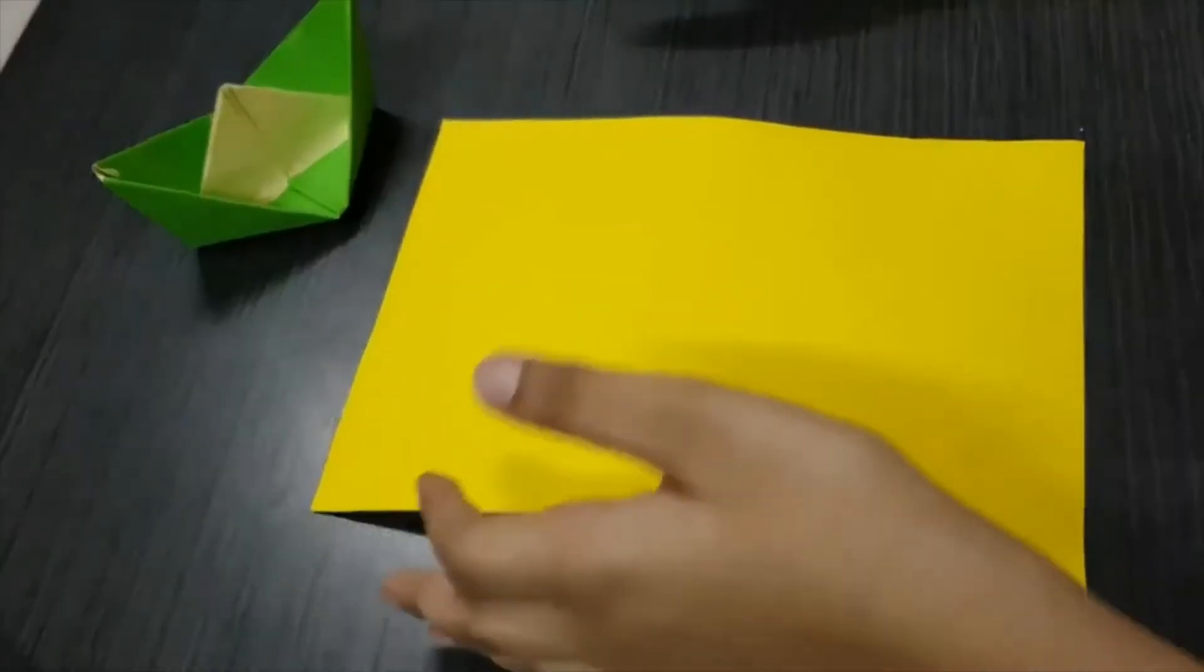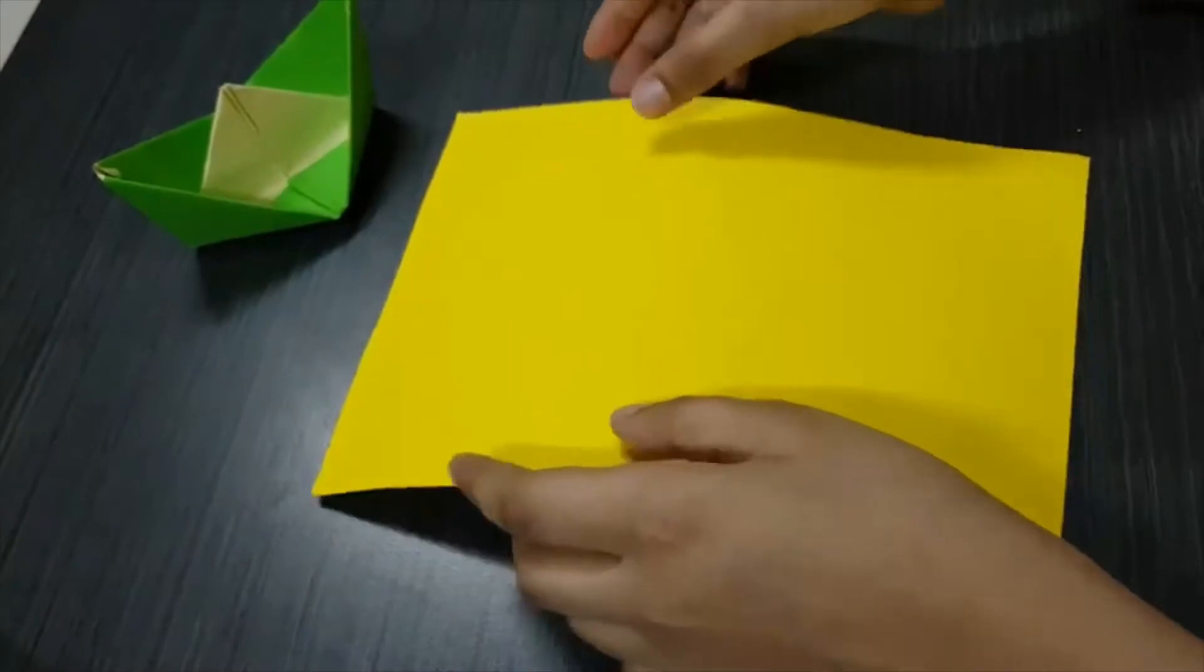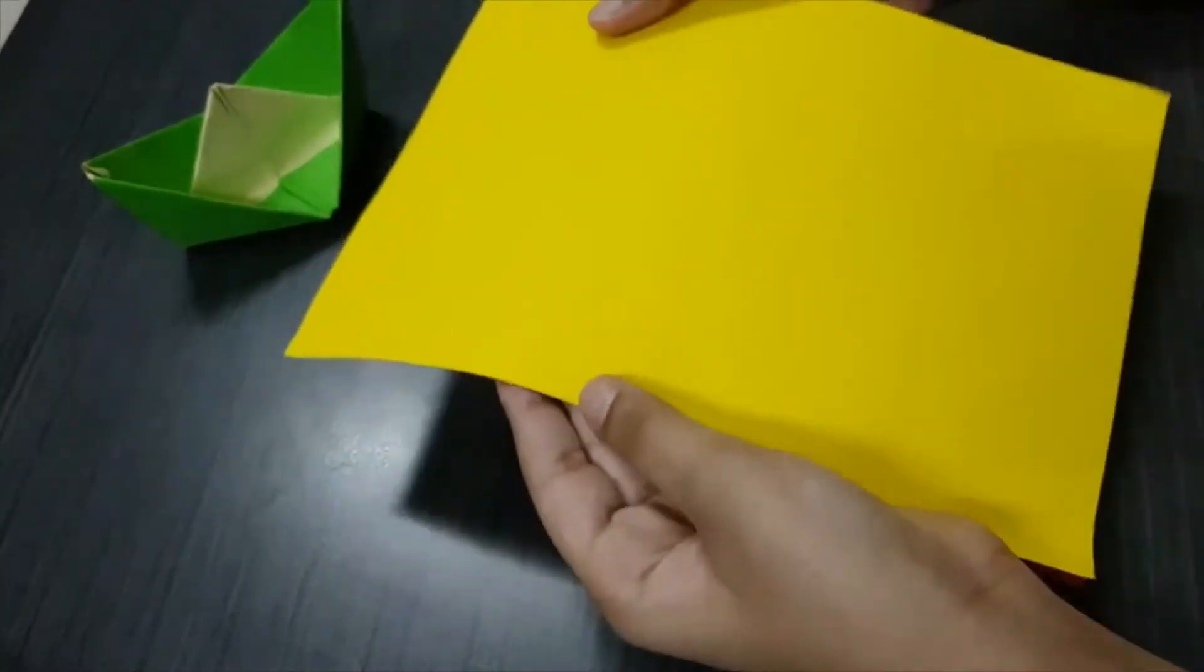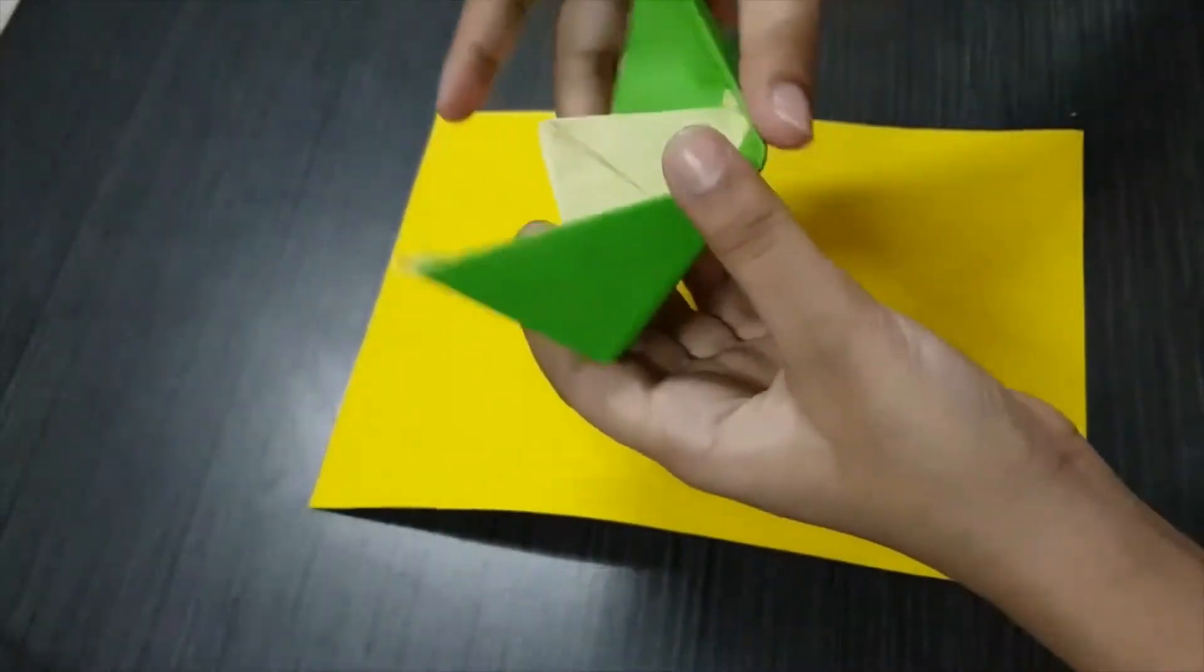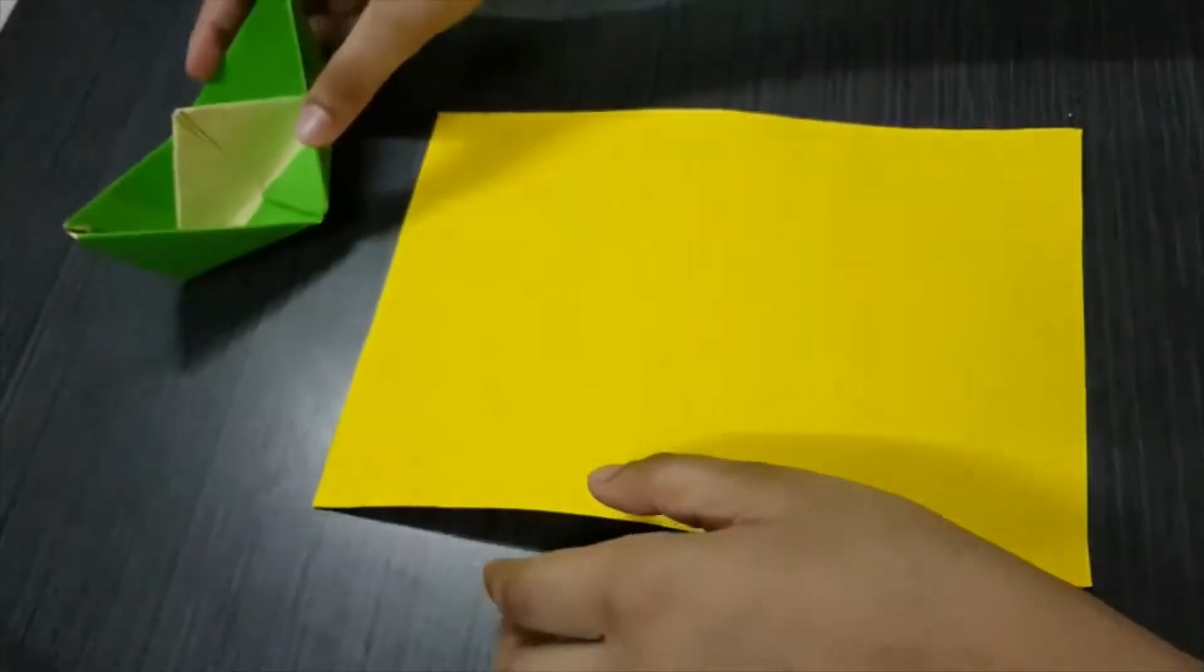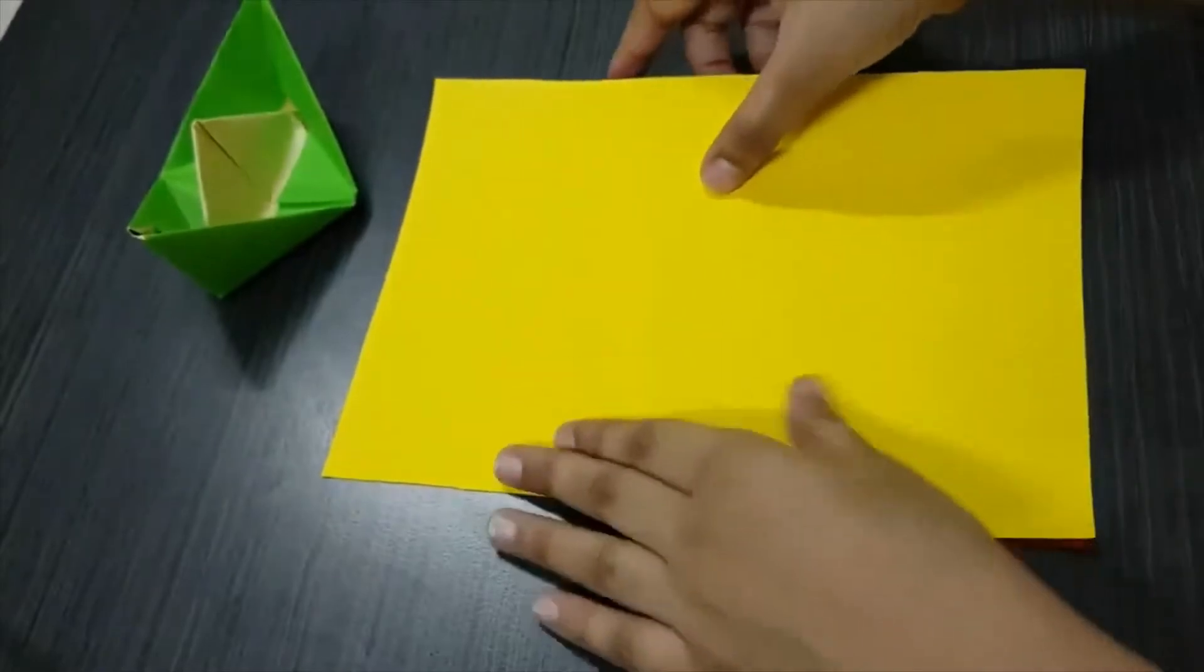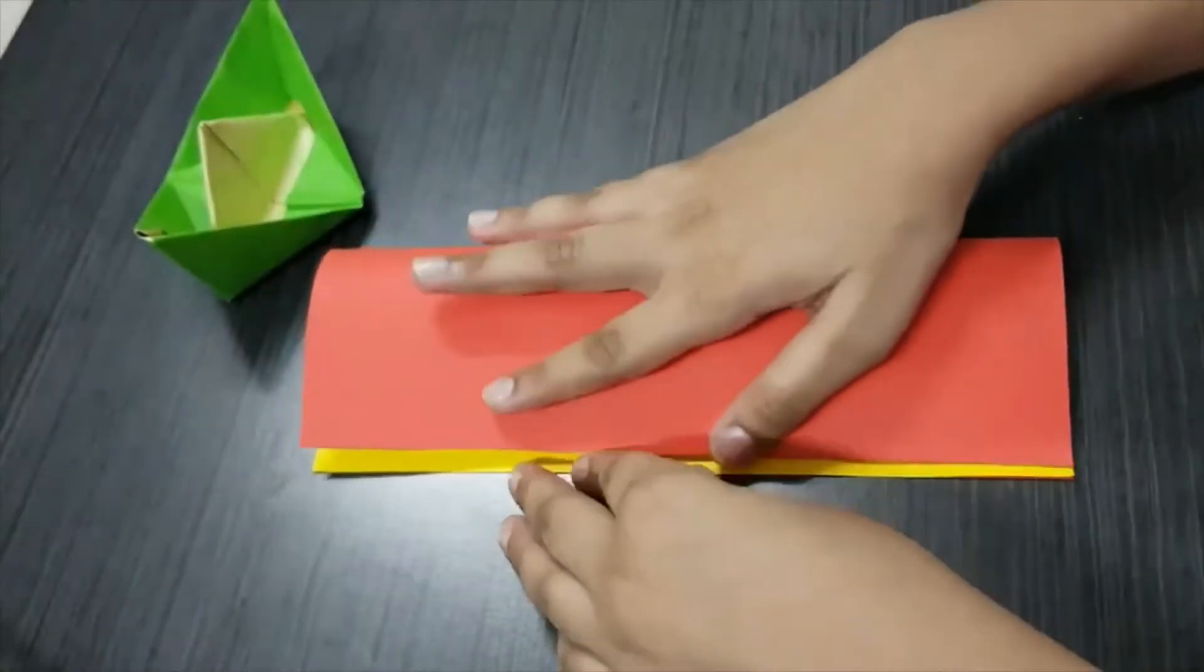Hi everyone, so we're going to be making an origami chomper. So let's do it. First you must take a piece of paper. Now this origami is really easy to make because it's very similar to an origami of a boat. So let's start now.